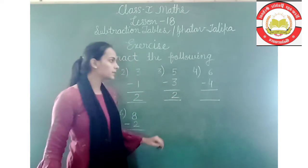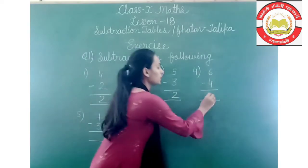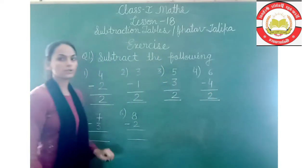Fourth is 6 minus 4. So 6 minus 4 is equal to 2.